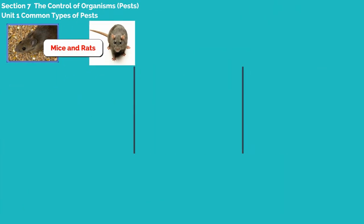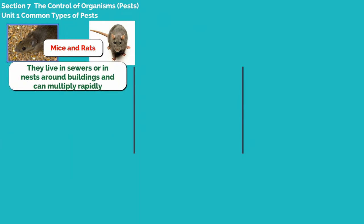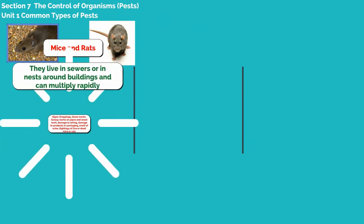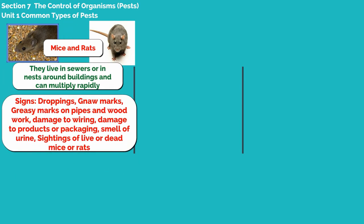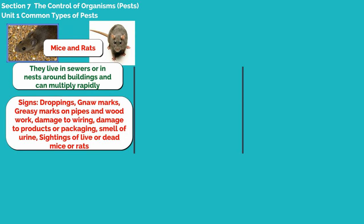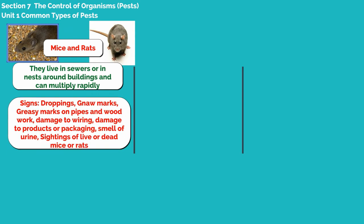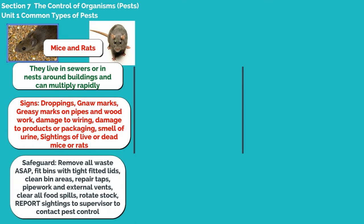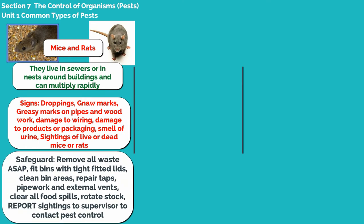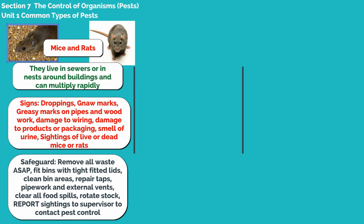Mice and rats live in sewers or in nests around buildings and can multiply rapidly. The signs of them are droppings, gnaw marks, greasy marks on pipes and woodwork, damage to wiring, damage to products or packaging, smell of urine, and sightings of live or dead mice or rats.